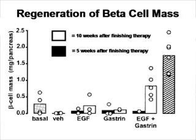When you do the same approach but look at beta cell content instead of insulin, you see basically the same thing — more beta cells in mice which received the combo of EGF and gastrin, and also higher levels of beta cells in mice where you waited ten weeks after stopping treatment, implying that some kind of regeneration is going on.